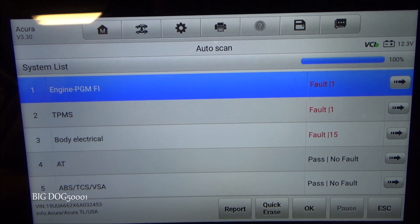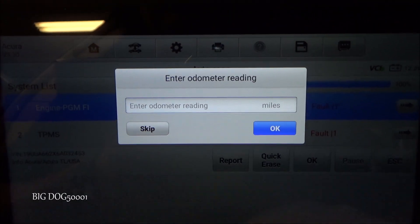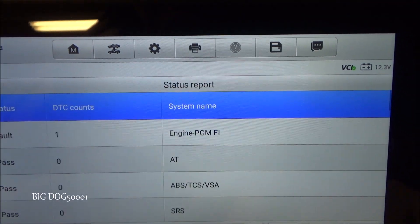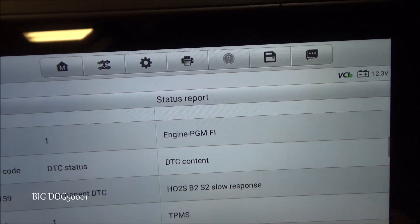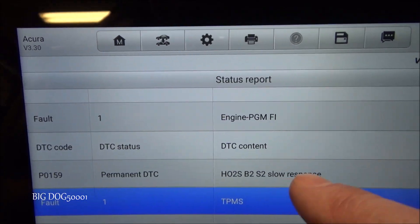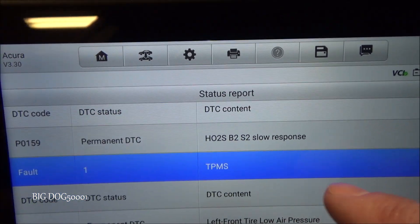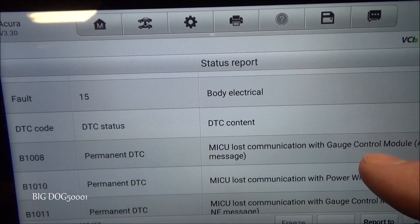Alright there are our fault codes. Only one in the engine computer which is what we're concerned with. Let's hit the report. Let's see. So there's our P0159 for our slow response. The other ones are TPMS and body electrical.